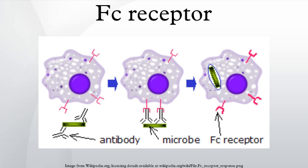The low-affinity receptor FcεRII is a C-type lectin. FcεRII has multiple functions as a membrane-bound or soluble receptor. It controls B-cell growth and differentiation and blocks IgE binding of eosinophils, monocytes, and basophils.